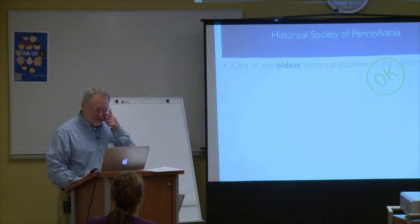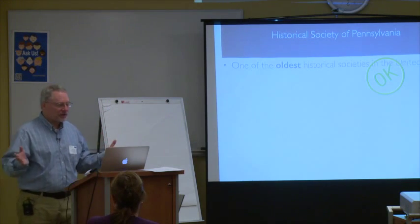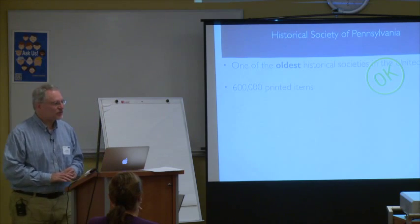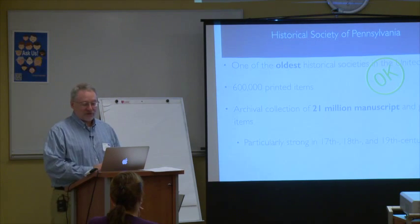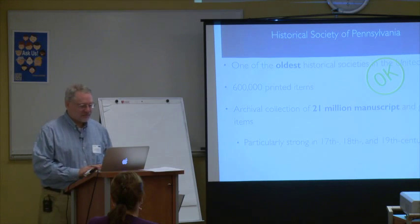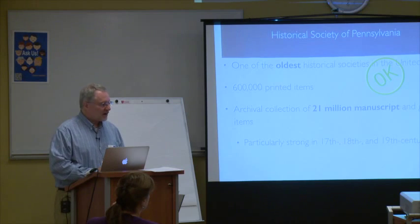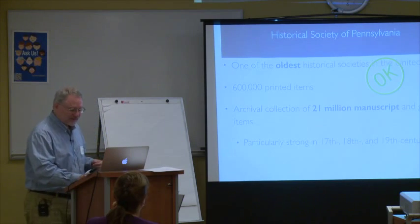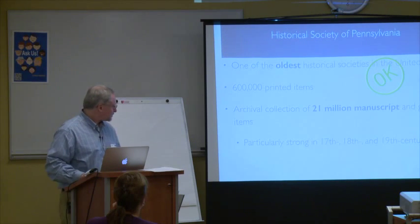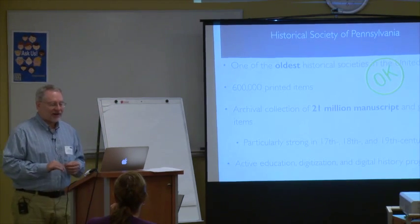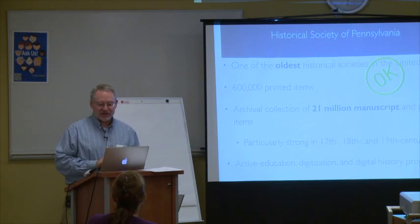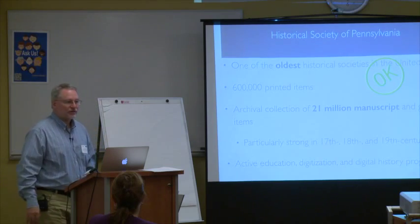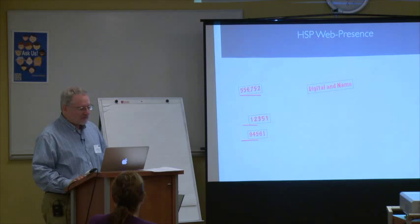A little bit about the Historical Society, just so you know the context for what we're doing. We are one of the oldest historical societies in the country. We have more than 600,000 printed items and more than 21 million manuscript items, including a strong collection of documents pertaining to the period of the revolution and the founding of this country. We have very active programs in education, digitization, and digital history — that is interpreted history — and we are continually digitizing our collection.